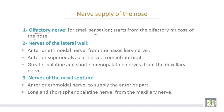Nerves of the lateral wall: the anterior ethmoidal nerve from the nasociliary branch of the ophthalmic nerve; the anterior superior alveolar nerve from the infraorbital nerve, which is the continuation of the maxillary nerve; and the greater palatine and short sphenopalatine nerves from the maxillary nerve. Nerves of the nasal septum: the anterior ethmoidal nerve to supply the anterior part, and the long and short sphenopalatine nerves from the maxillary nerve.